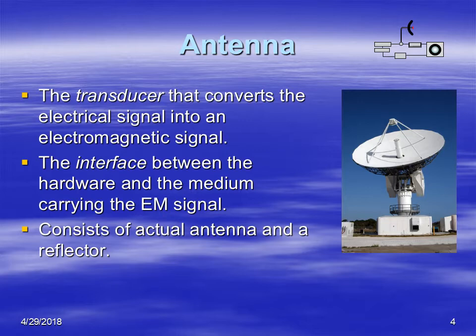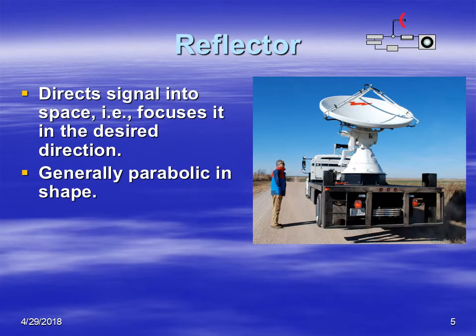The radar antenna is actually two parts: the parabolic dish — what we call the reflector — and a device that emits radiation, which is the antenna itself. The reflector is typically parabolic because that focuses the energy the best. It can be pointed in any direction to send the signal out at whatever elevation angle and azimuth you want, focusing the energy in a particular direction, as I can show in the next two slides.